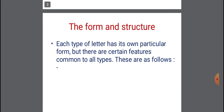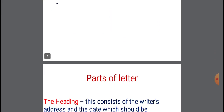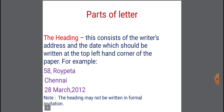Now the form and structure. Each type of letter has its own particular form, but there are certain features which are common to all types. We are going to discuss the parts of a letter. The first part is the heading. The heading consists of the writer's address and the date, which should be written at the top left-hand corner of the paper.